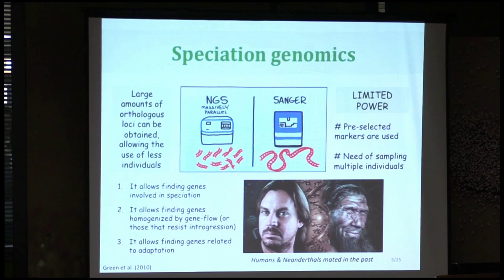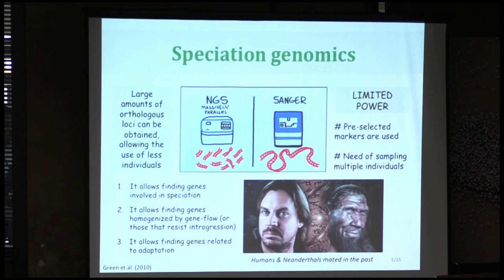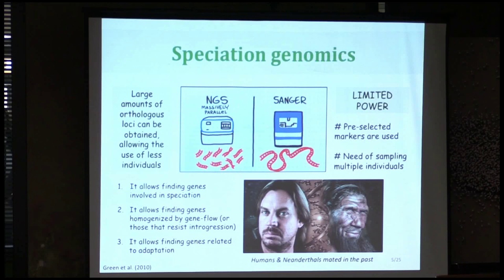On this slide, I just wanted to say that before, using Sanger sequencing, we had to select some specific markers and kind of believe that these markers were telling the truth. But sometimes the markers you are using are not representing the real species tree. With genomics, we don't worry about that — we just sequence everything, and then we can study things like which genes are actually involved in speciation, hybridization, and adaptation.